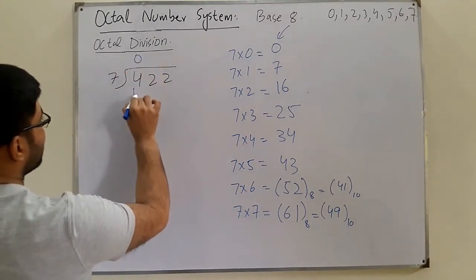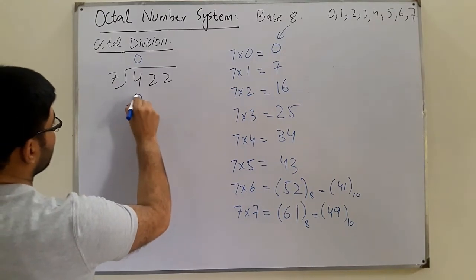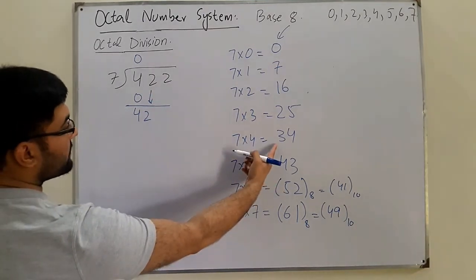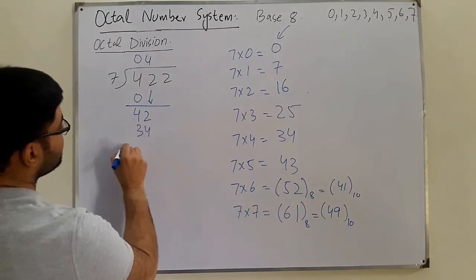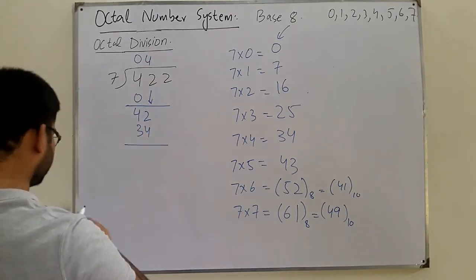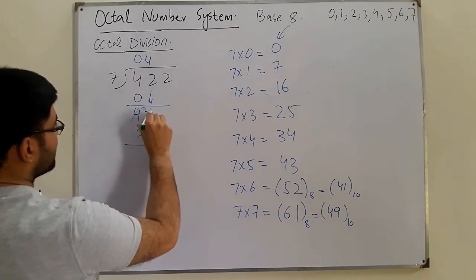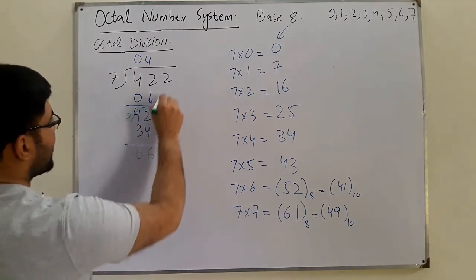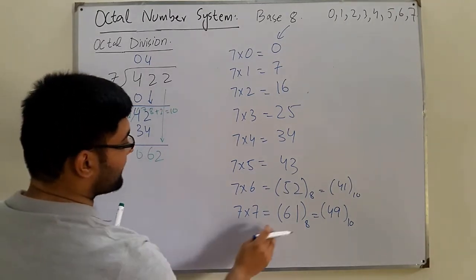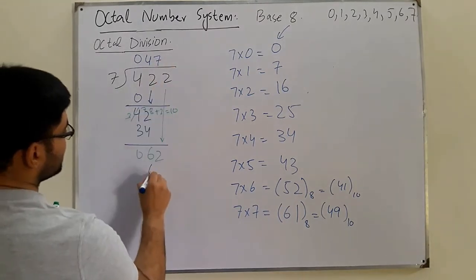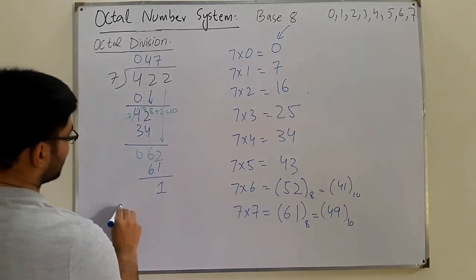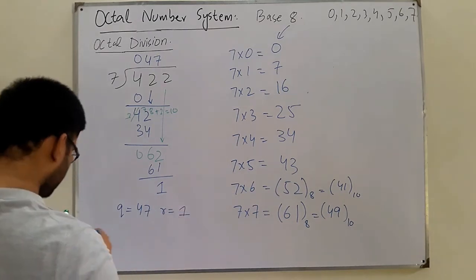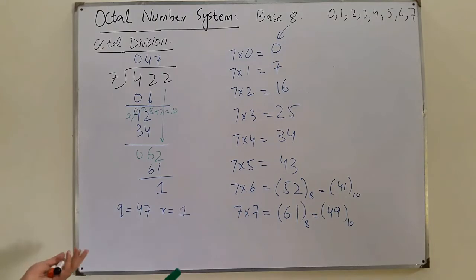Performing the division of 422 by 7: 4 is less than 7, so we bring down — write 0, then 42. Since 42 is greater than 34 (7 × 4), we use 34. Borrowing as needed: 8 plus 2 is 10, 10 minus 4 is 6; remainder is 6, bring down 2, giving 62. Since 7 × 7 = 61, we use that: 62 minus 61 leaves remainder 1. The quotient is 47 with remainder 1.